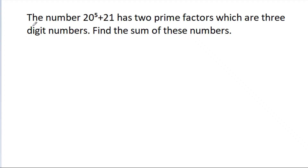We have been given that the number 20 to the power 5 plus 21 has two prime factors which are three-digit numbers. Find the sum of these numbers.